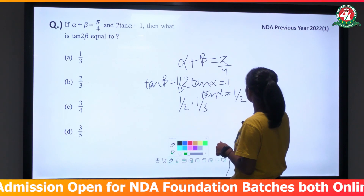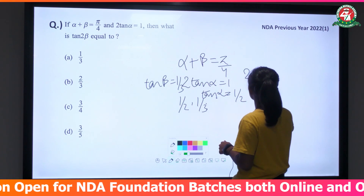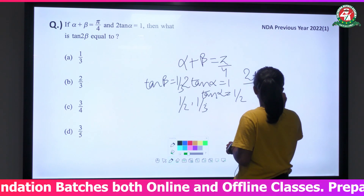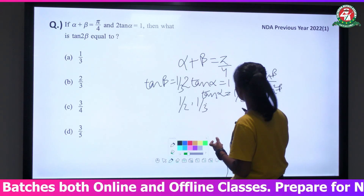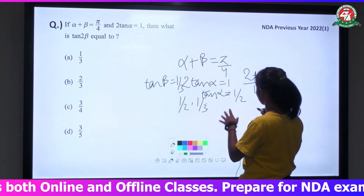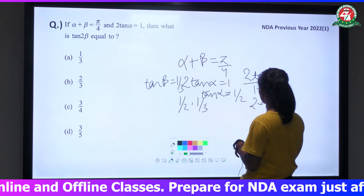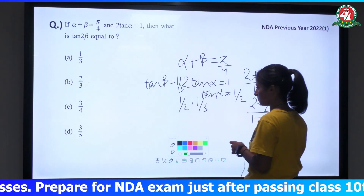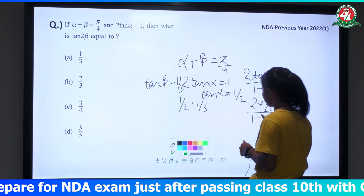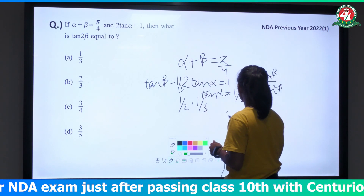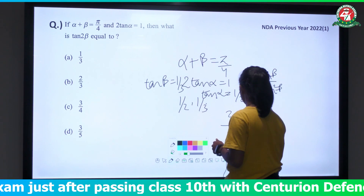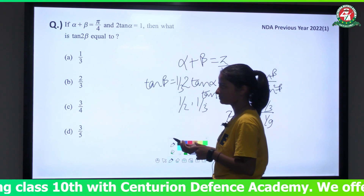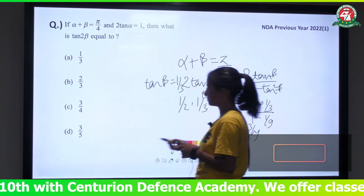Substituting tan β = 1/3: tan 2β = (2 × 1/3) / (1 - 1/9) = (2/3) / (8/9). After simplifying, we get 2/3 × 9/8 = 3/4. So tan 2β = 3/4, and the answer is option C.